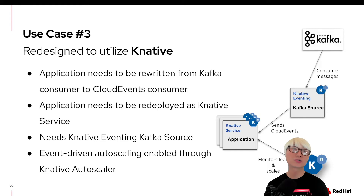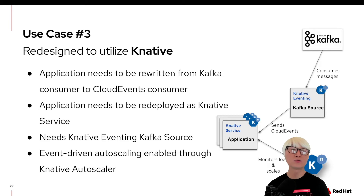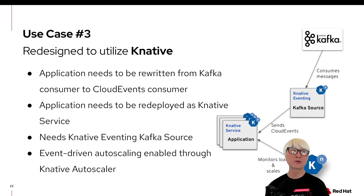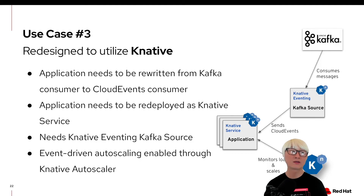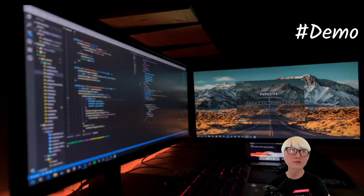This is the third use case: how to redesign for autoscaling on Kubernetes with KNative. We're going to first rewrite the existing application to consume KNative messaging and cloud events, then deploy the application as KNative services rather than standard Deployment objects, enable the KNative Eventing Kafka source to consume messaging from Kafka, and use the KNative Autoscaler to scale the application from zero to one — the serverless behavior.